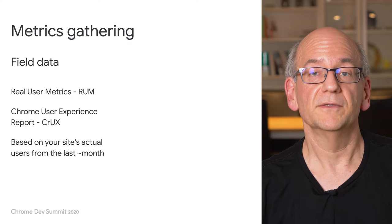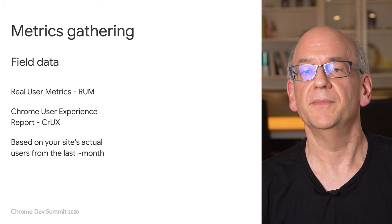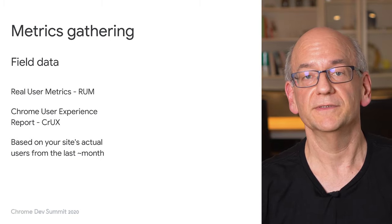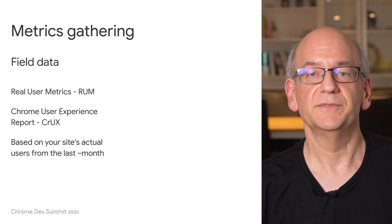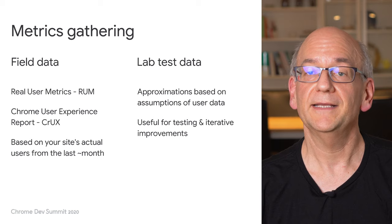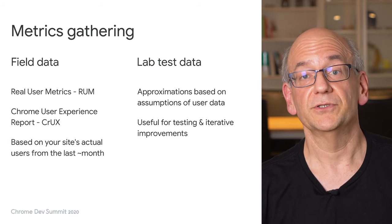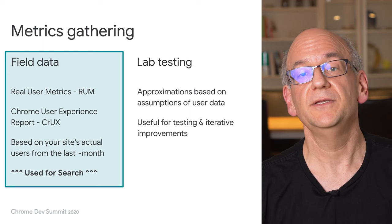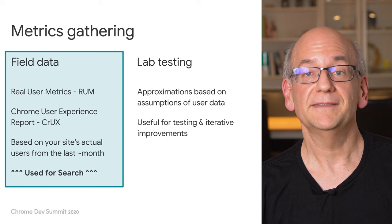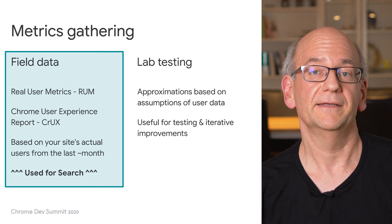When it comes to data sources, we differentiate between field data and lab test data. Field data, also called real user metrics or RUM data, is collected from users over the course of about a month and is based on what they experience when viewing your site. This is a part of the Chrome User Experience Report, in short, CrUX. Lab tests, on the other hand, are generated on demand with testing tools in your browser or on a server, using settings that try to approximate what users would see. For search rankings, we use field data, as this is what your site's users have experienced over time. This makes the data more representative for your site, taking into account where your users are located and how they access your website.